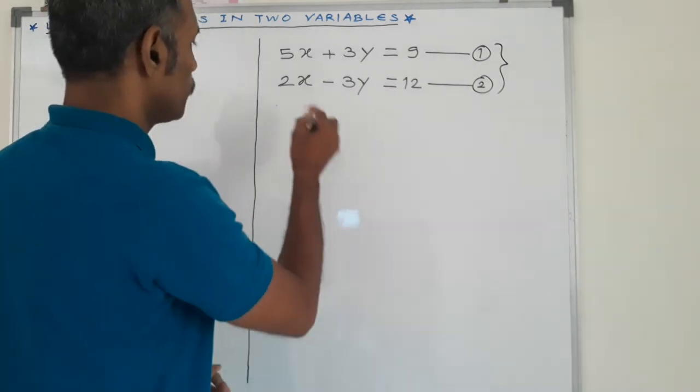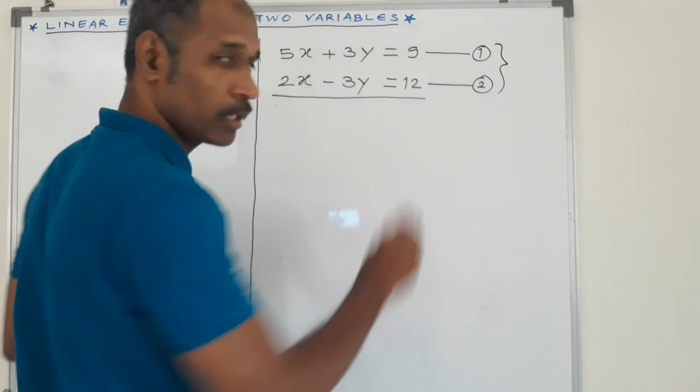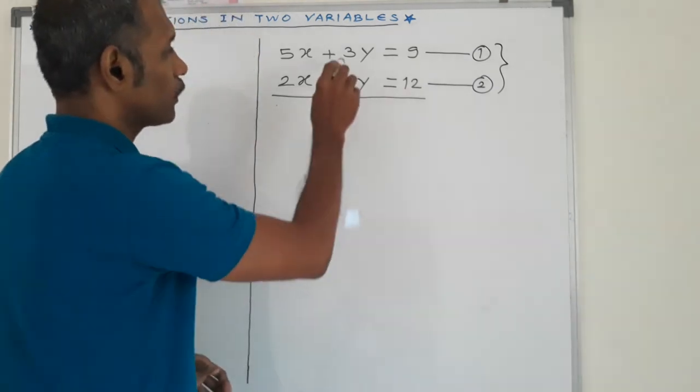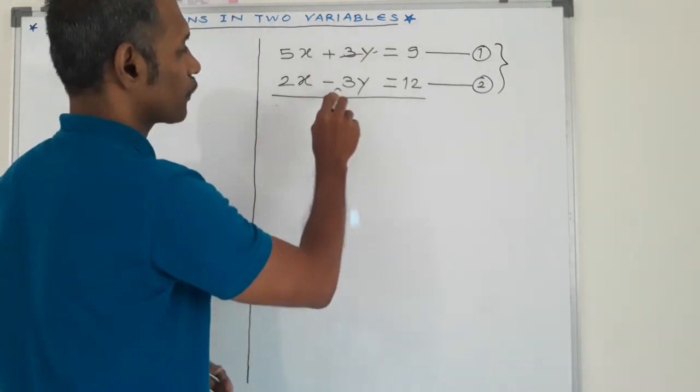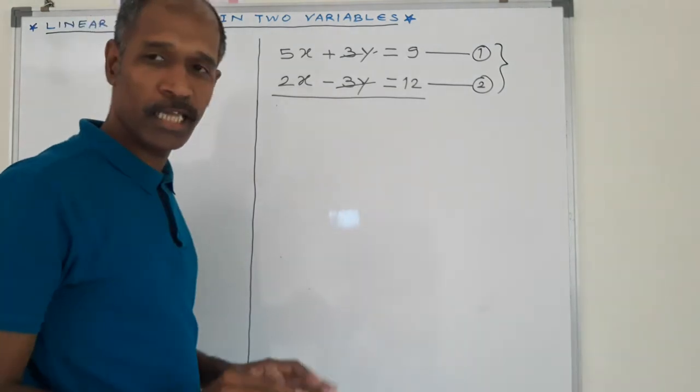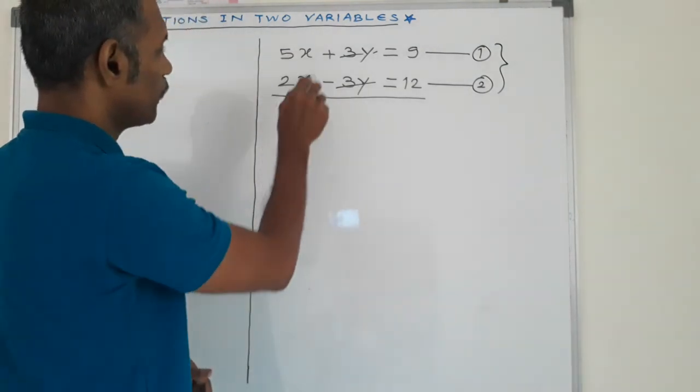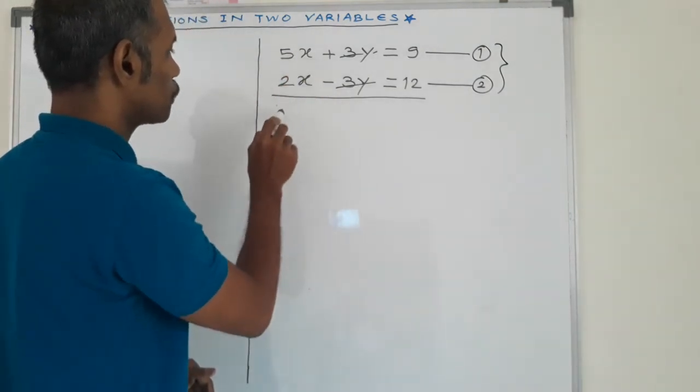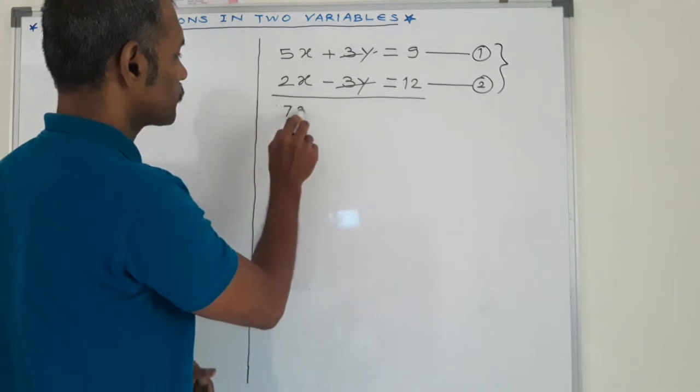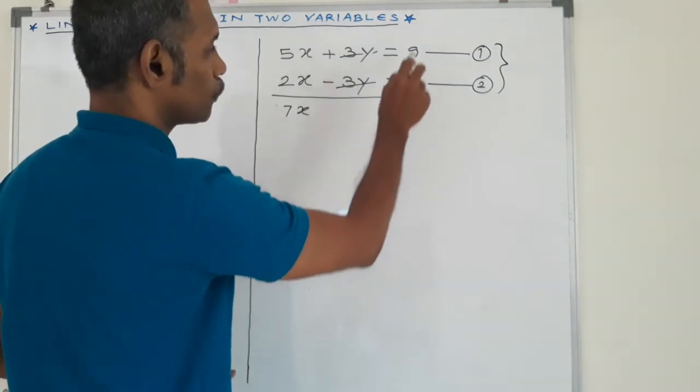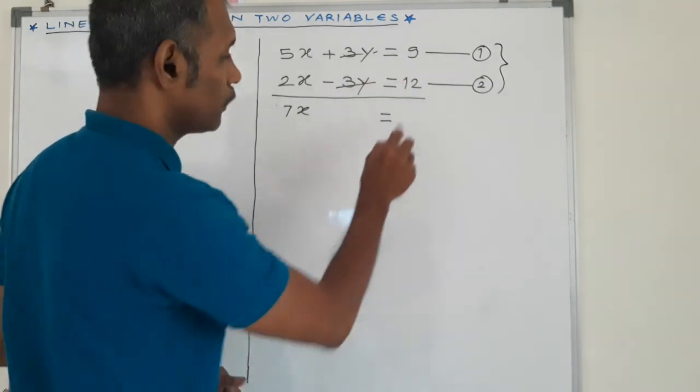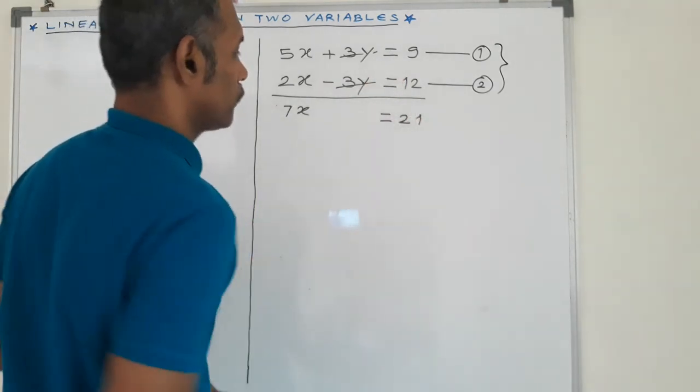We draw here a single horizontal line. Now, plus 3y and this minus 3y cancelled. Therefore, remaining 5x plus 2x, that is 7x, is equal to 9 plus 12, which equals 21.